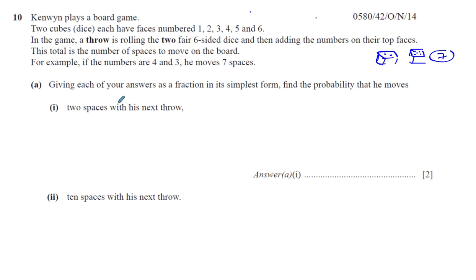So now, giving each answer as a fraction in its simplest form, find the probability that he moves two spaces with his next throw. Now, how many ways are there for him to get a total of two when you throw two fair dice in one throw? Well, there's only one way of getting a total of two, is if you get one on each dice, if each dice shows a one on it. So for the first dice, you're going to have one over six, and for the second dice, you're also going to have one over six, so the answer is going to be 1 over 36.